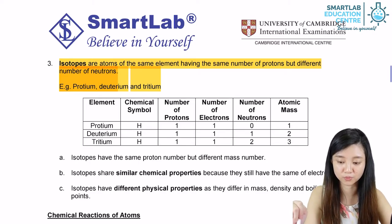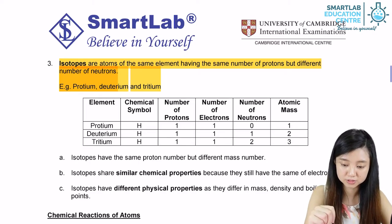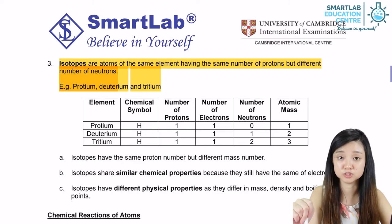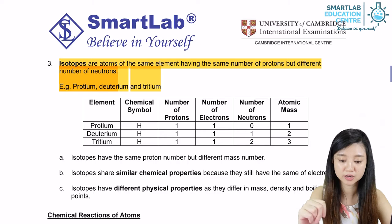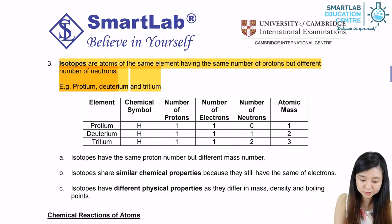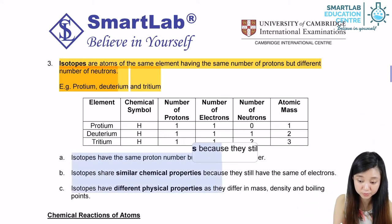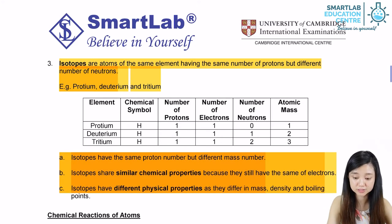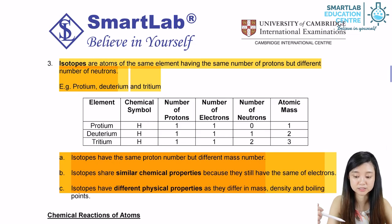So for protium it's going to be one, deuterium will be two, and tritium is going to be three. Therefore, their mass number changes. Isotopes also have similar chemical properties because they have the same number of electrons, and they have different physical properties as they differ in their mass, density, and also boiling points.